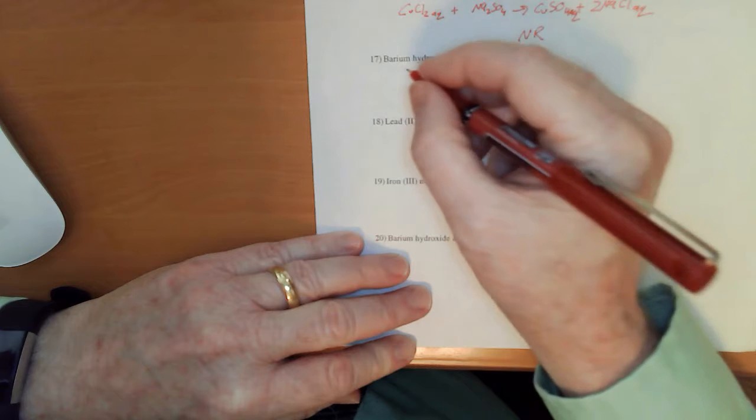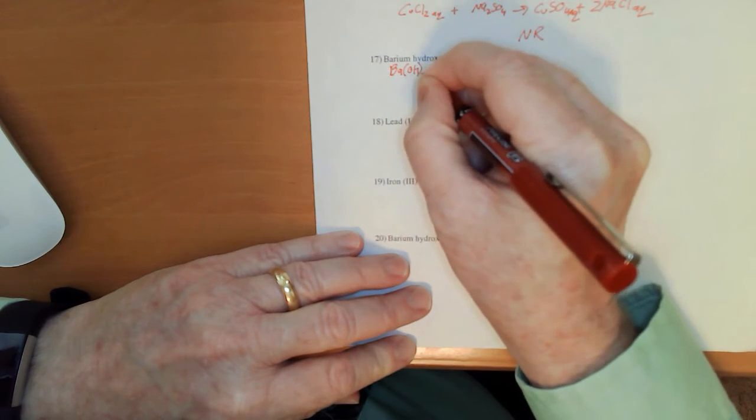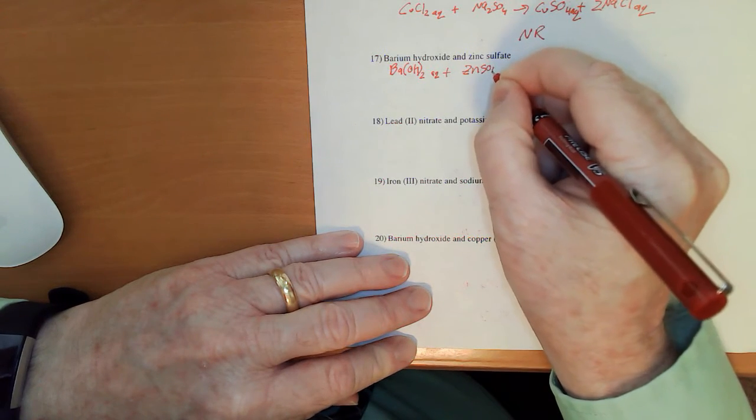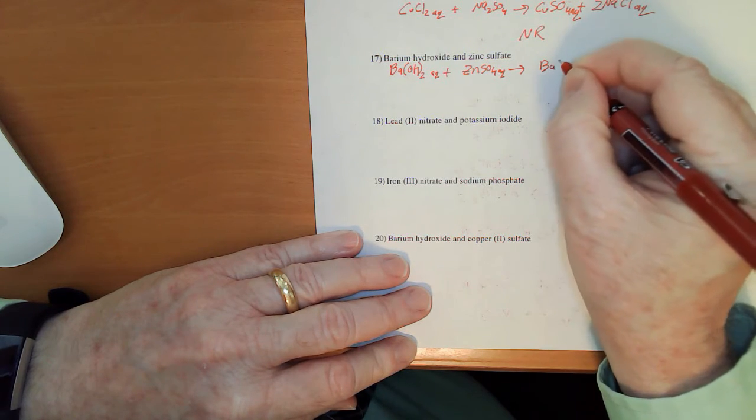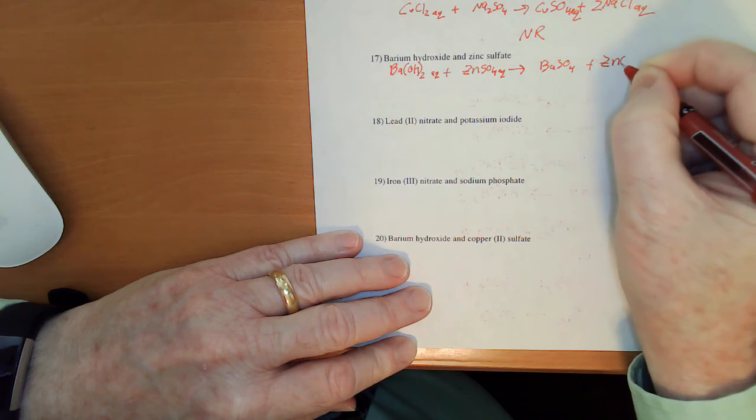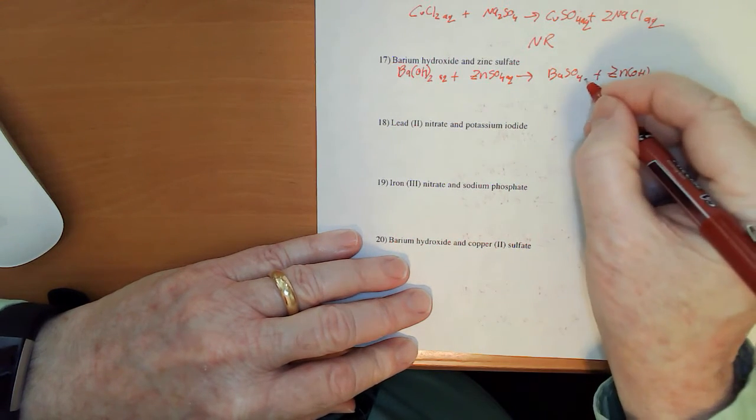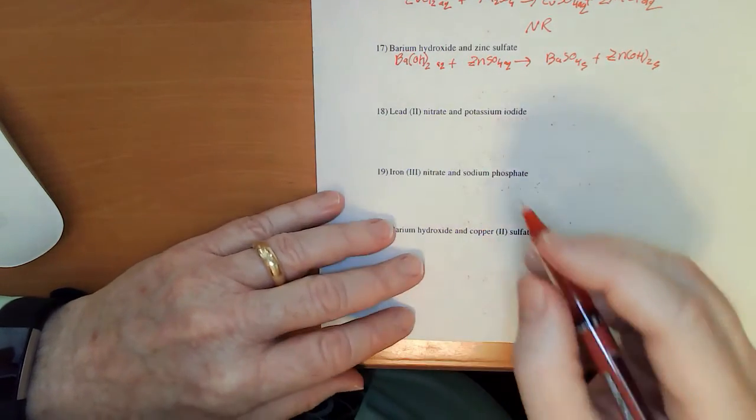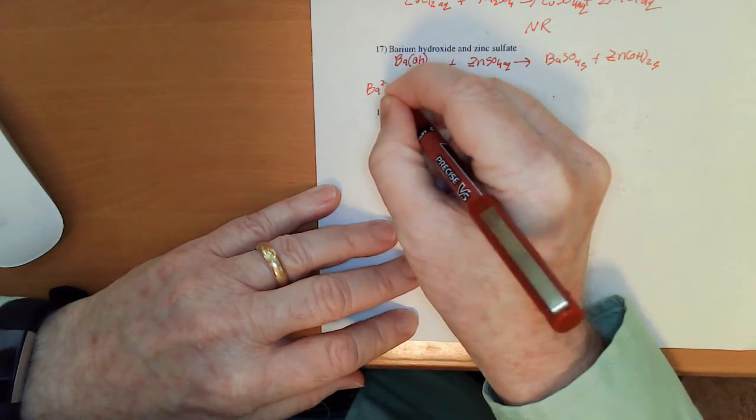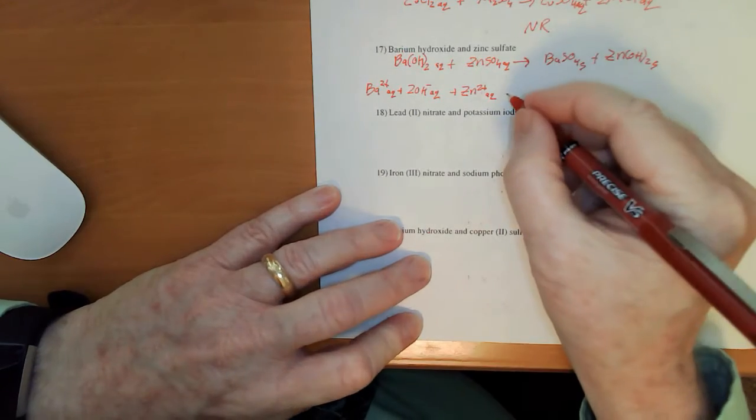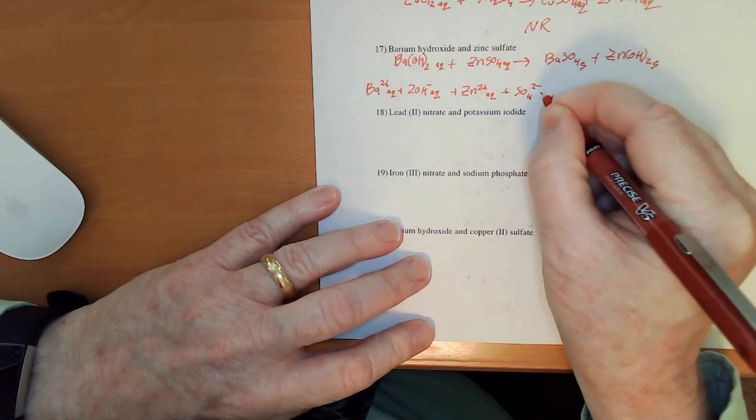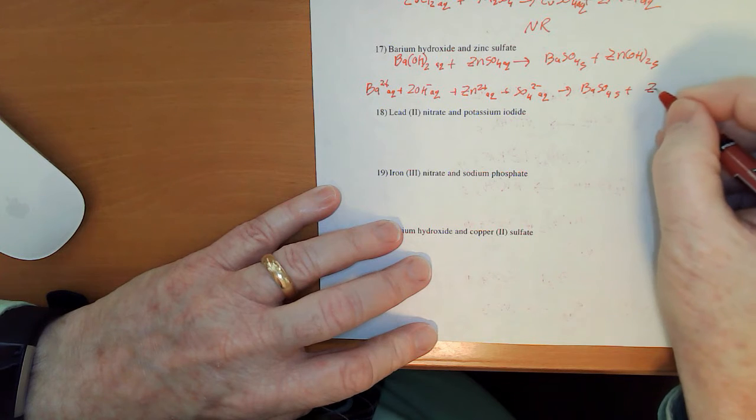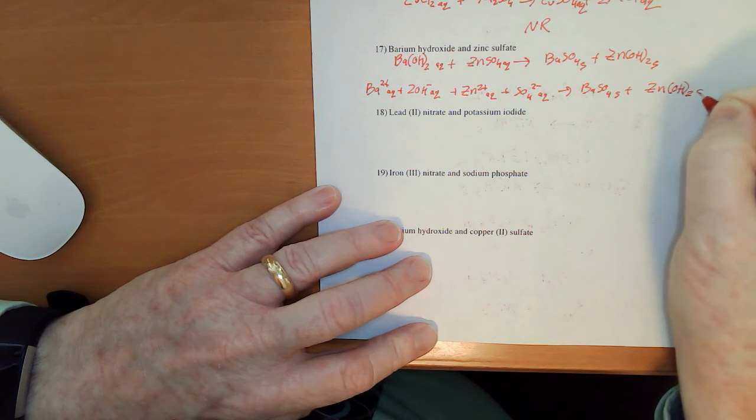Barium hydroxide, Ba OH sub 2. And zinc sulfate, ZnSO4. BaSO4 and Zn OH sub 2. We know that's a solid. But this is a hydroxide of a transition metal. Which is also going to be a solid. So, this is one of those double precipitates again. Ba 2 plus aqueous. And we're also going to have an SO4 2 minus aqueous. To give me the BaSO4 solid. And the Zn OH sub 2 solid.